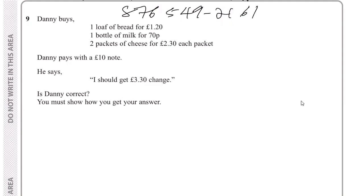It's 1.20, and one bottle of mint for 70 pence. I'm assuming that pence is like 70 cents, so if somebody can correct me if I'm wrong. And then two packets of cheese for 2.30 each packet.